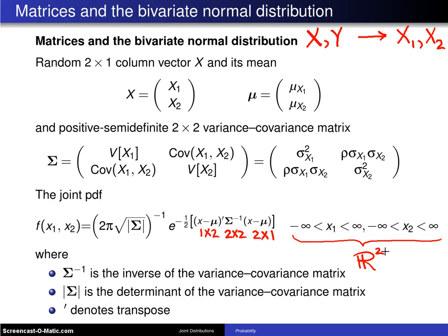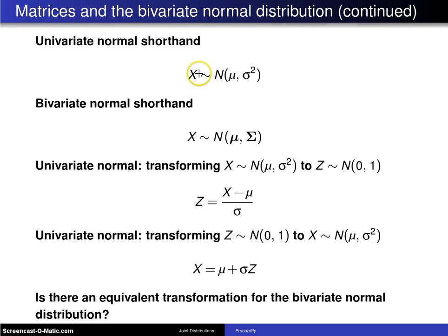So on the next page, you'll see some of the spin-offs of this notation. And first of all, in the univariate case, we would write x is distributed as a normal distribution with mean mu and variance sigma squared. How does that generalize?